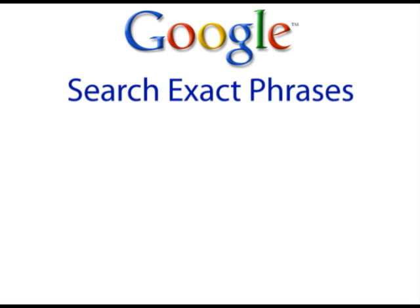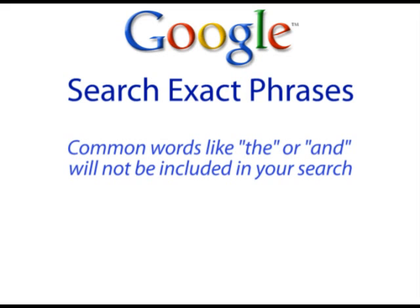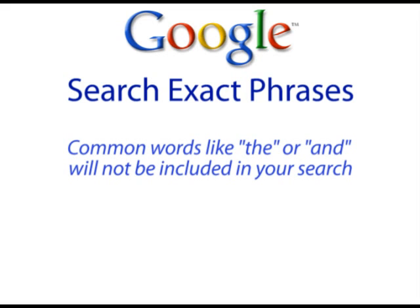Search Exact Phrases. If you ever try to search Google with a phrase that includes such common words as 'the' and 'and', the search results will generally not include those words. However, if you put quotes around your search, Google will only return results that include that exact phrase.